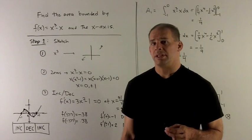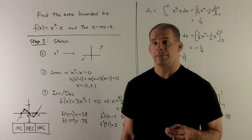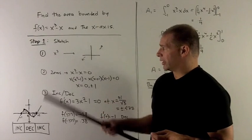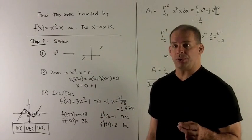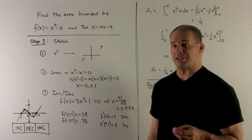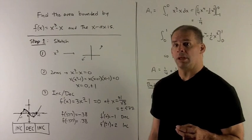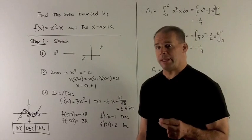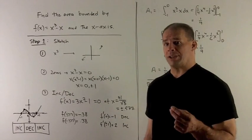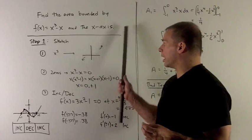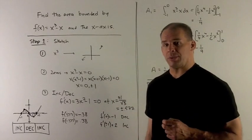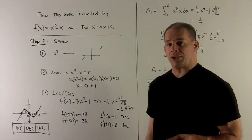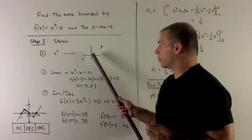Our first step is to sketch the graph. First thing we can do is take a look at the behavior as we go to plus infinity or minus infinity. Since the leading term of my function is x³, that means as we go to plus infinity, y is going to go to plus infinity, so pointing up. As we go to minus infinity, the y's are going to go to minus infinity, so pointing down.